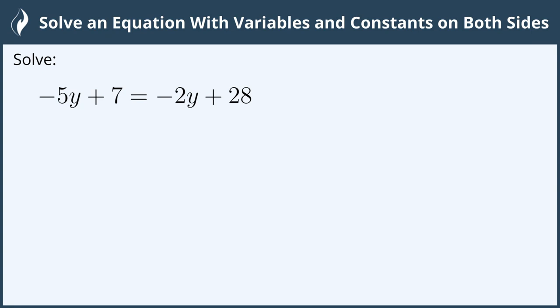The first thing we want to do is isolate the variable. That means move all of the terms with the variable on one side of the equation and all of the constants to the other. And we can pick either one, it doesn't matter.